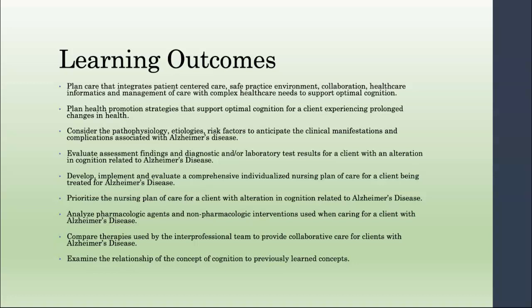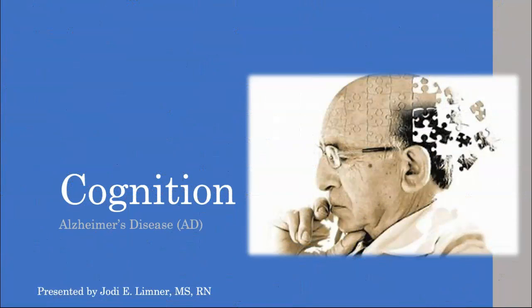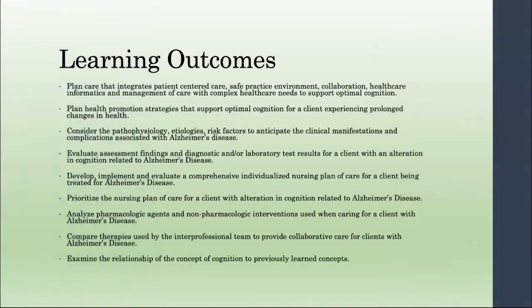Hi guys, this is Jodi. We're going to talk about cognition and specifically the exemplar of Alzheimer's disease. When you're studying, always look at your learning outcomes — they're basically the same for the exemplars we teach throughout the fourth semester. Really concentrate on the nursing interventions. There isn't a lot of pathophysiology with Alzheimer's disease, which is kind of nice. There aren't a lot of medications either, but there are a couple I noted on this PowerPoint, so pay attention to those. Let's jump into it.